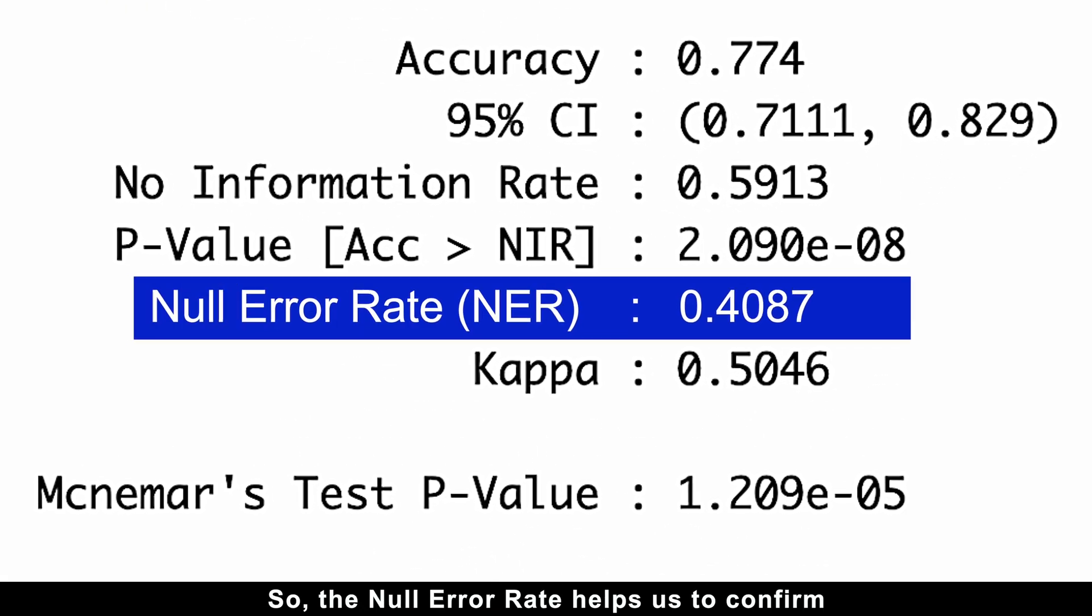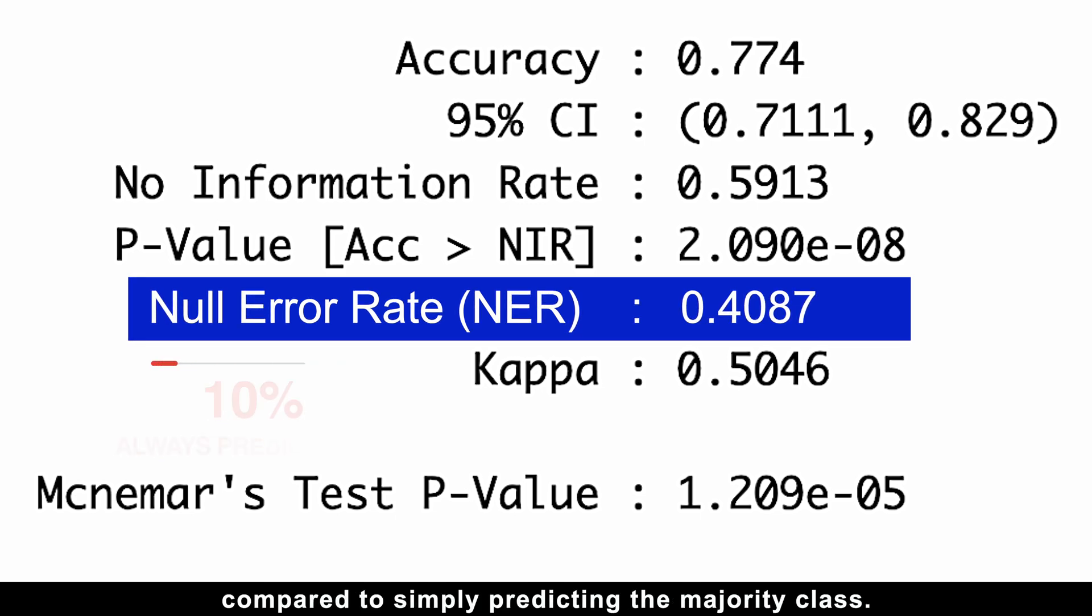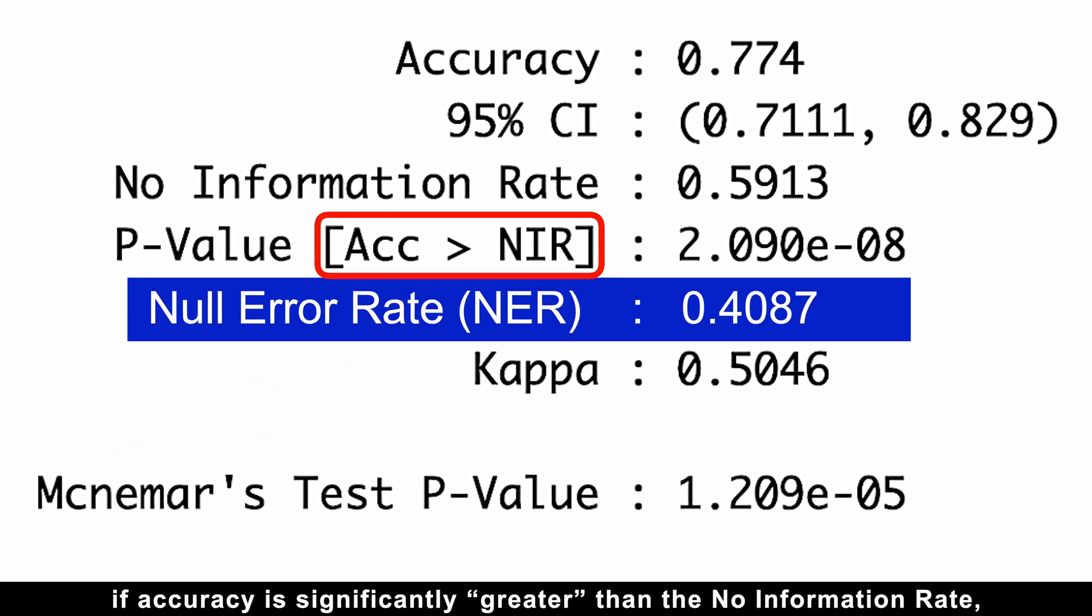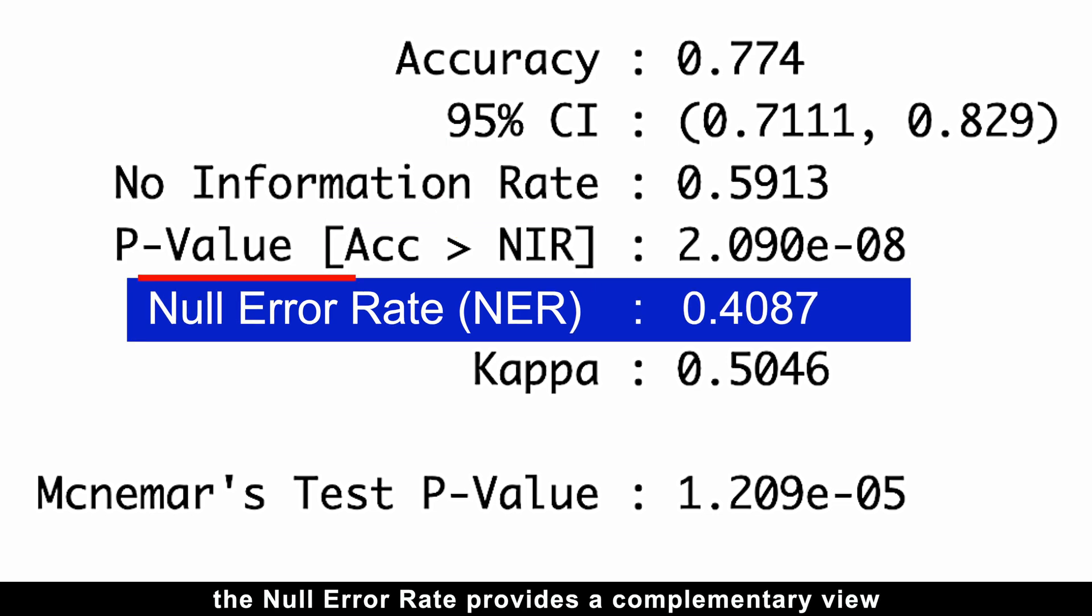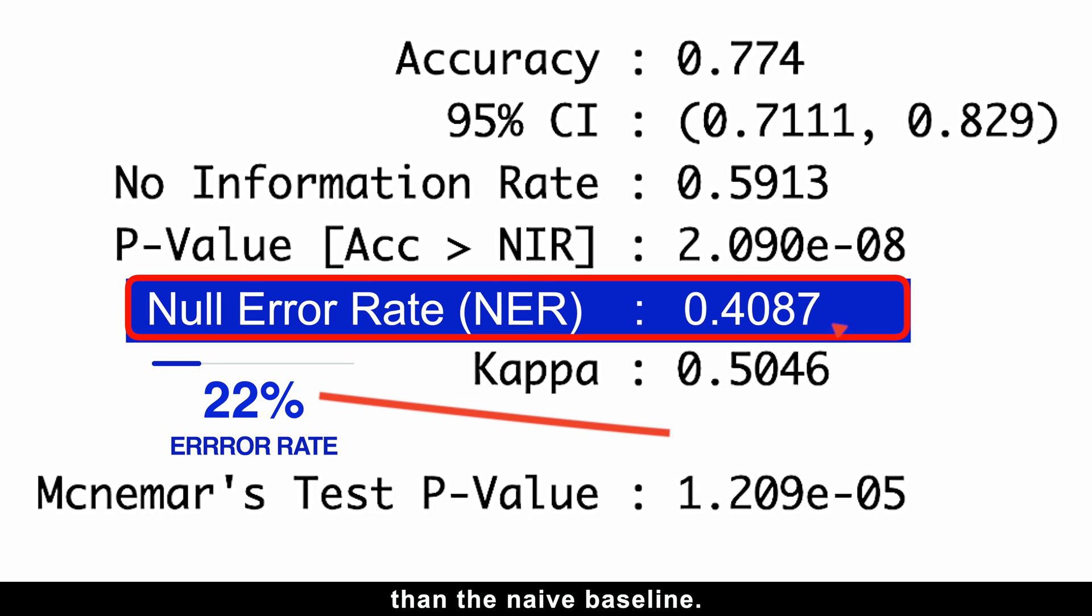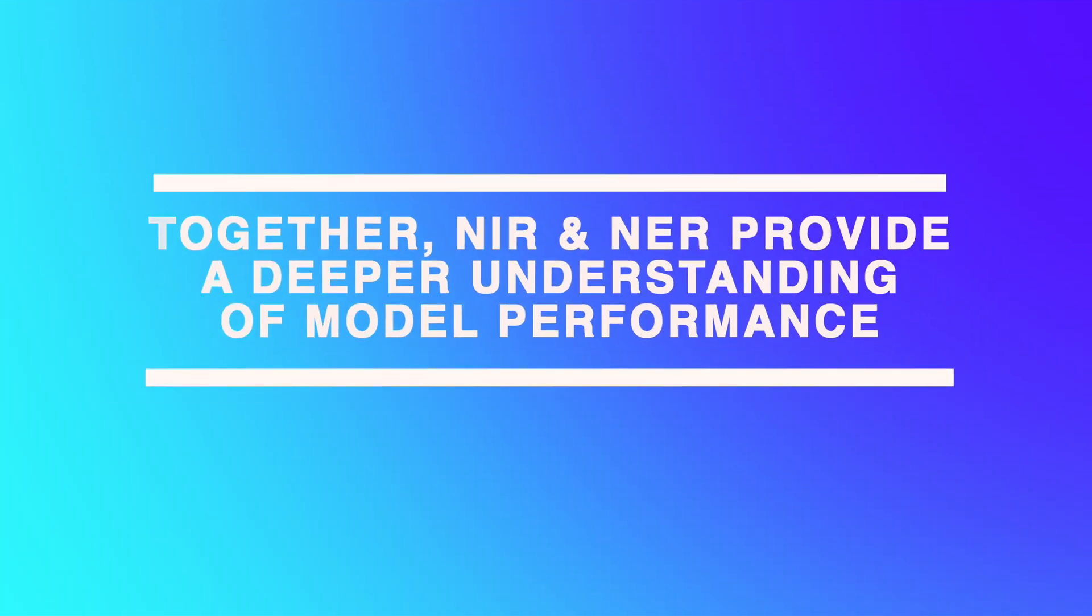So the null error rate helps us to confirm whether a model is truly reducing error, comparing to simply predicting the majority class. While the confusion matrix function tests if accuracy is significantly greater than the no-information rate, the null error rate provides a complementary view by assessing if the error rate is significantly lower than the naive baseline. Together, these metrics provide a deeper understanding of model performance.